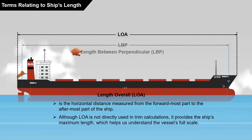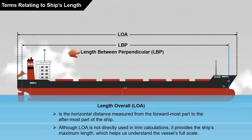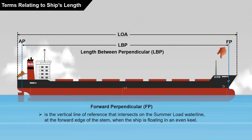Next, we have length between perpendiculars, or LBP. Before I explain LBP, let's first look at what we mean by the forward and aft perpendiculars. The forward perpendicular is the vertical line of reference that intersects on the summer load waterline at the forward edge of the stem when the ship is floating in an even keel.